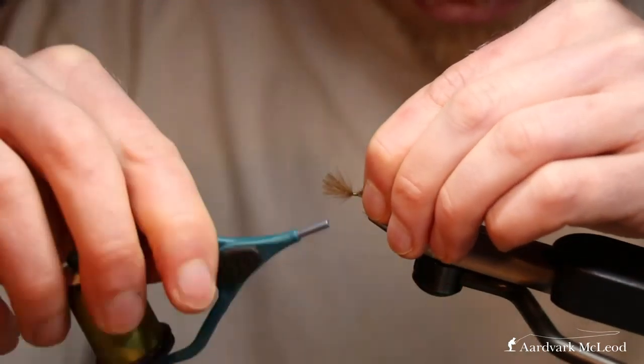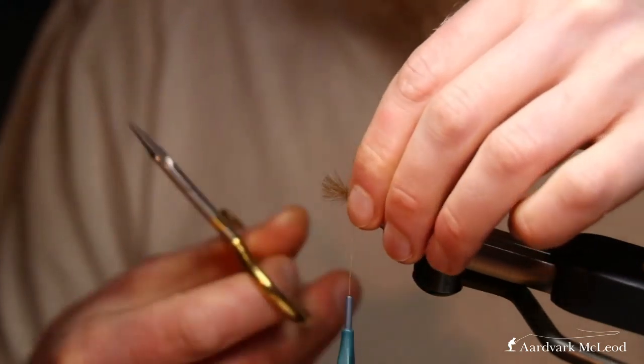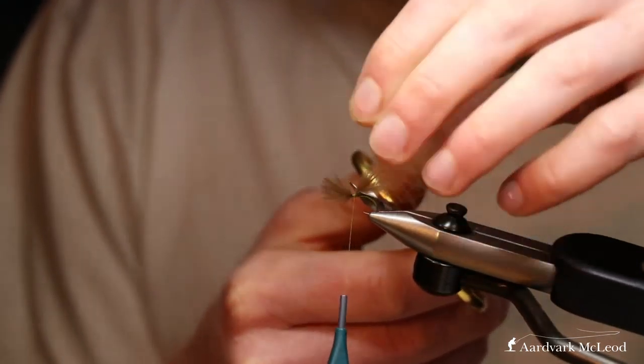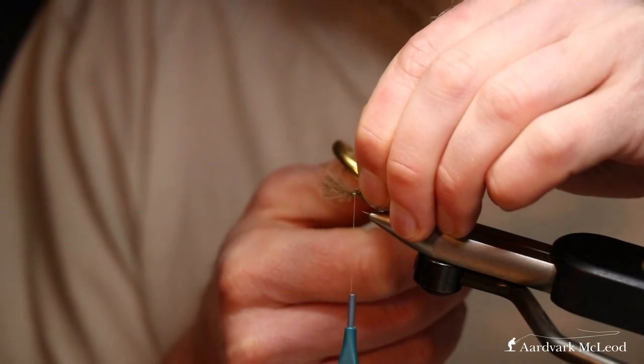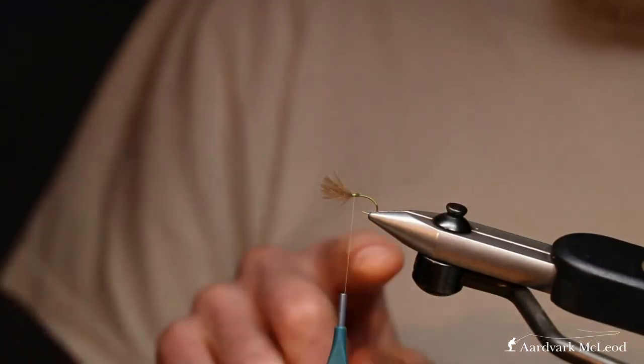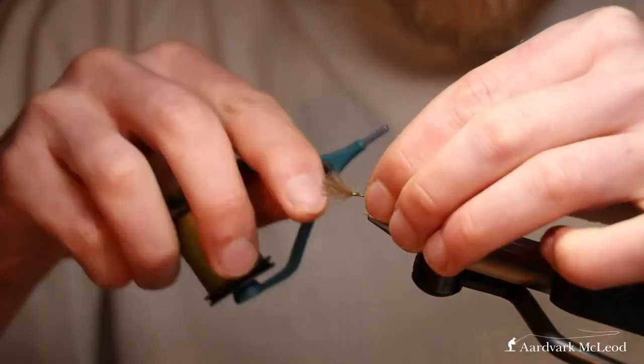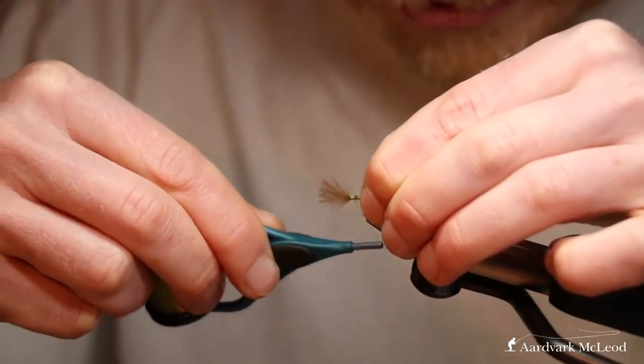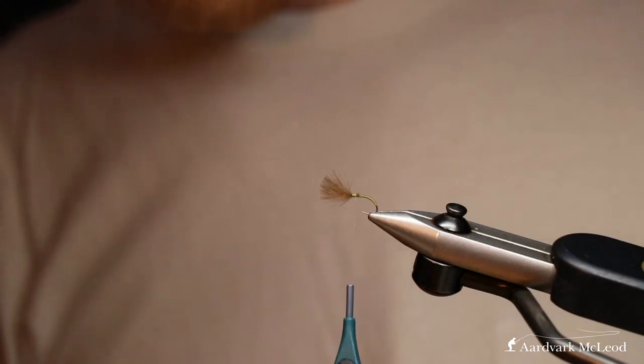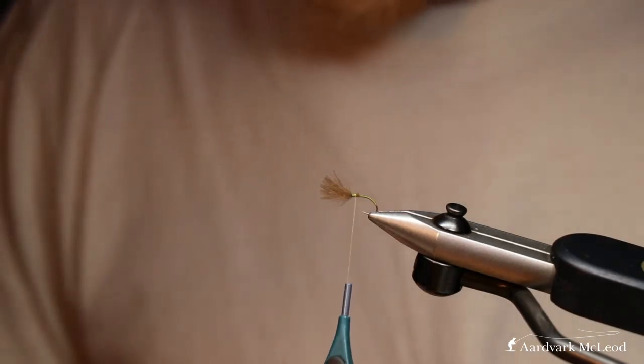Wing length, again, roughly the body length. And pinch that to the hook, thread that through, and slide it down on top of the hook there. So wind to the eye and then really bind that down. So that's looking good.